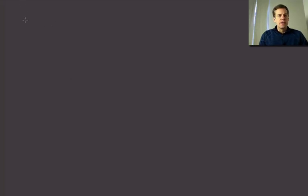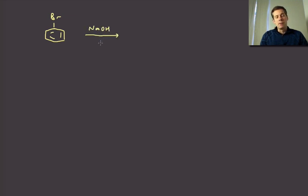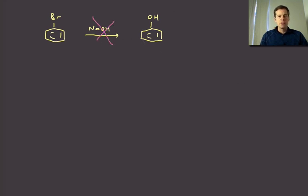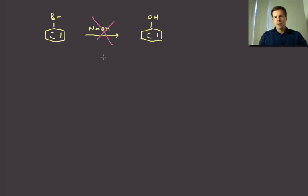In the last video we learned that if we take an aromatic halide — like bromobenzene — and treat it with a nucleophile such as sodium hydroxide, we would not expect a substitution reaction to occur. This would be a nucleophilic process, and nucleophilic aromatic substitution (SNAr) requires a strong electron-withdrawing group on the aromatic ring to stabilize the intermediate carbanions that result.